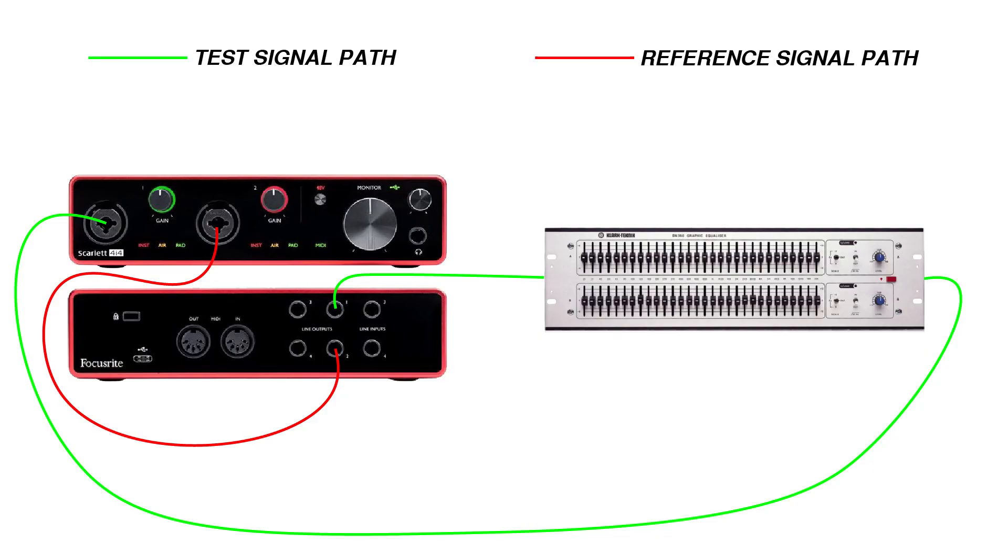In a basic measurement of an electronic device, it's much simpler. The test signal path includes the interface output, the electronic device such as an equalizer, and the interface input. The reference path only includes the interface output and the interface input. This makes it possible for the software to measure only the changes caused by the electronic device.